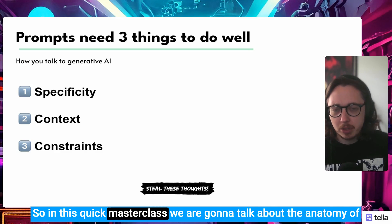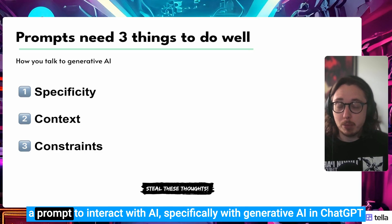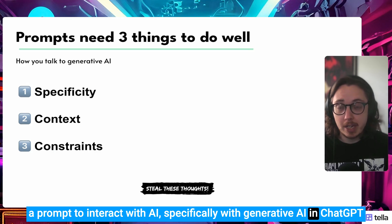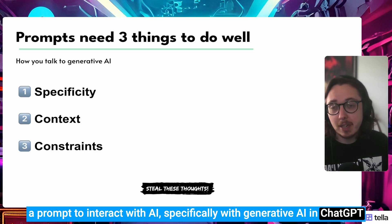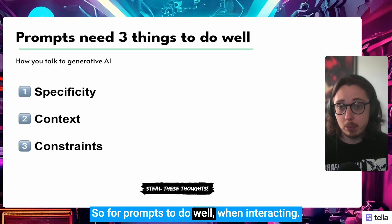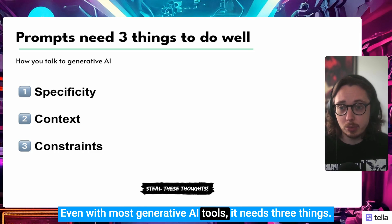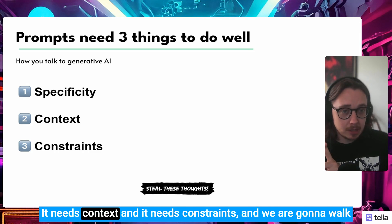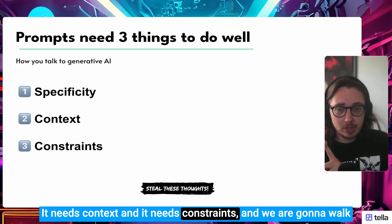Hey folks, so in this quick masterclass, we are going to talk about the anatomy of a prompt to interact with AI, specifically with generative AI in ChatGPT as our tool of choice. No fluff in this — we're going to crack into it. For prompts to do well with most generative AI tools, it needs three things: specificity, context, and constraints.